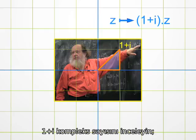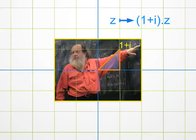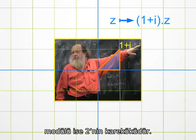Look at the complex number 1 plus i. It corresponds to the point with abscissa 1 and ordinate 1. Its argument is 45 degrees, and its modulus is the square root of 2, using Pythagoras' theorem.